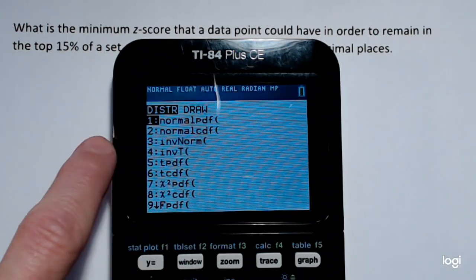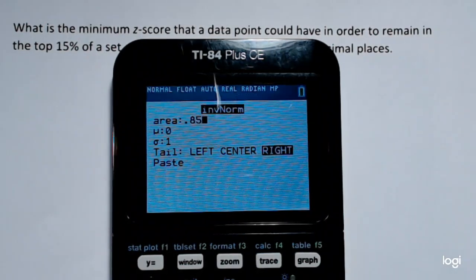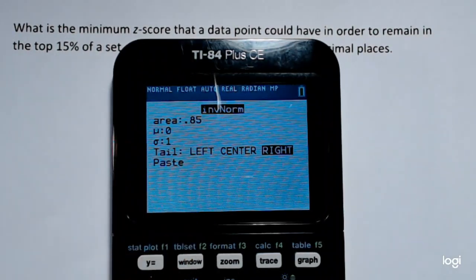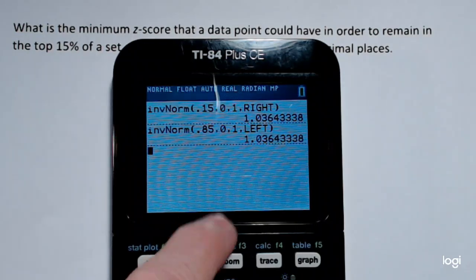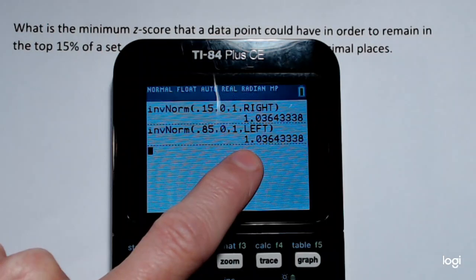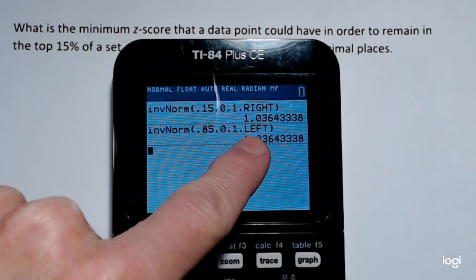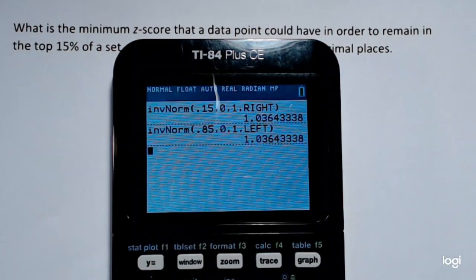Going back to the inverse normal, I could have put in 0.85 and change this to left. And you'll see that I get the same z-score. It's the z-score that separates the lower or the left 85% from the upper or right 15%.